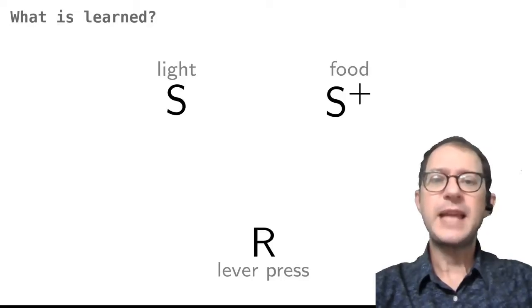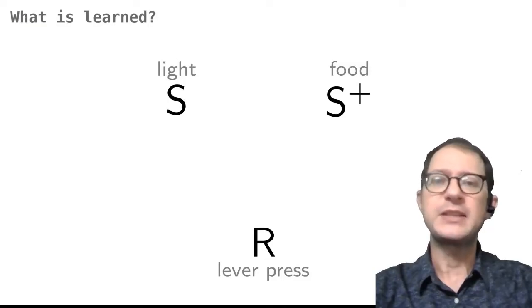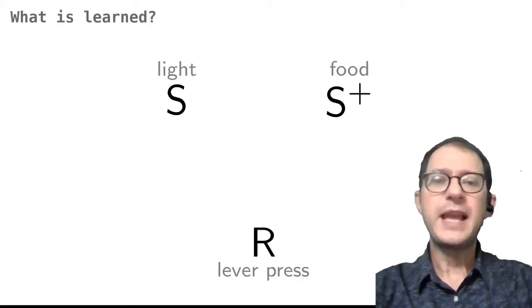Lastly, there is a stimulus S that enables the animal to distinguish situations where the response is rewarded from situations where it is not. For example, it is common to reward a lever press only if a light is on. In this case, the stimulus S would be the light. Given these three elements, we saw that learning could mean a couple of different things.